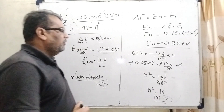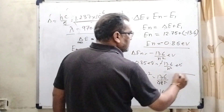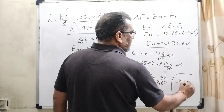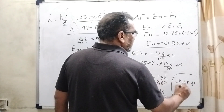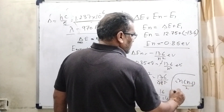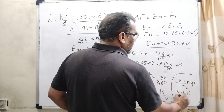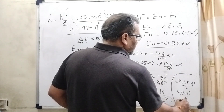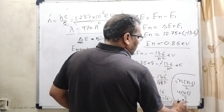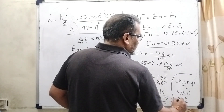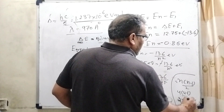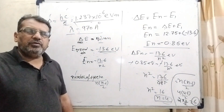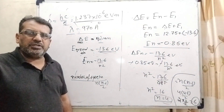Substitute n = 4 into the formula n(n−1)/2 to get the number of spectral lines. That gives 4 × 3 / 2 = 6. So the number of lines is 6. I hope you understood this question.